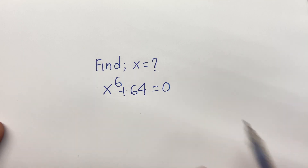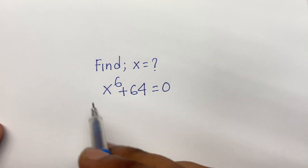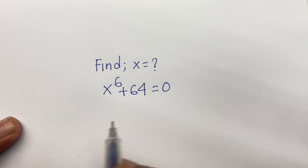How to solve x to the power 6 plus 64 is equal to 0. We will find out what is the value of x.